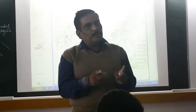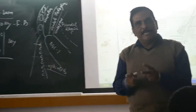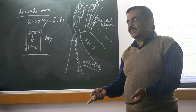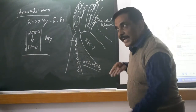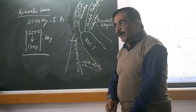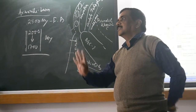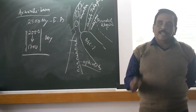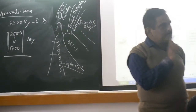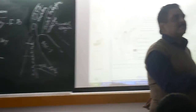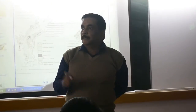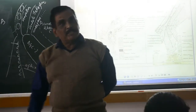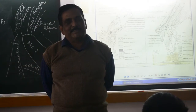Those granites are produced from the melting of the sediments. The sediments are dragged inside during subduction and they melt. So granites are the major imprints of Aurogenic events — major imprints of Aurogenic events.